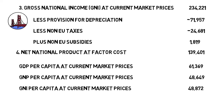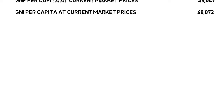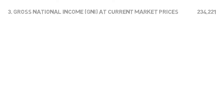We can also look at GDP per capita, divided by the population level. In Ireland we get figures such as 61,000 output per person for GDP, 48,000 for GNP, and 48,000 for GNI per person as well — quite a significant difference between the GDP and GNP/GNI per capita figures.